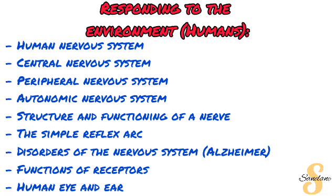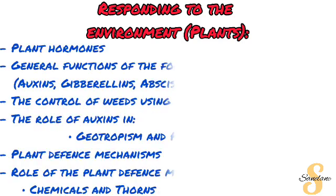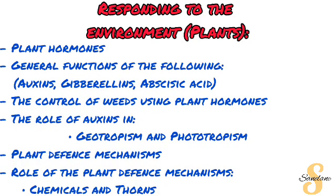The functions of the different parts of the human ear and human eye are very important. You need to be able to write them down whether it's a matching column question or a question where you're choosing between options. You have to be very comfortable with those. The next topic is also responding to the environment, but this time we're looking at plants. With plants, we start with plant hormones — and by the way, all of these topics require you to be comfortable with your definitions first.